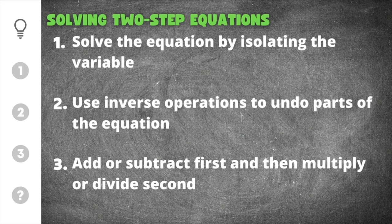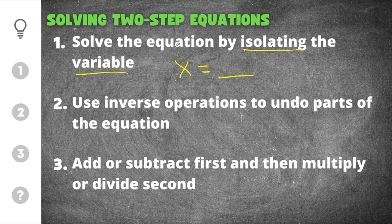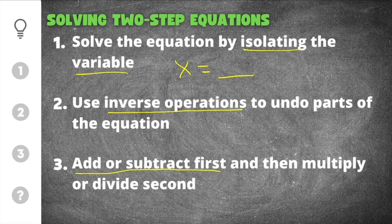We have three important things to remember when solving two-step equations. First, solve the equation by isolating the variable — you want the variable to equal a number, so x equals a number. The way you do that is by using inverse operations to undo parts of the equation. The inverse operation just means you do the opposite: if it's plus you subtract, if it's subtraction you add. Finally, you add or subtract first, and then you multiply or divide second.